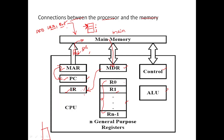If the instruction involves any arithmetic or logical operations, it is necessary to obtain the required operands in the ALU. The operand in memory is fetched by sending its address to the MAR. When the operand has been read out of memory into the MDR, it is transferred to the ALU. After one or two repeated cycles, the ALU performs the desired operation.